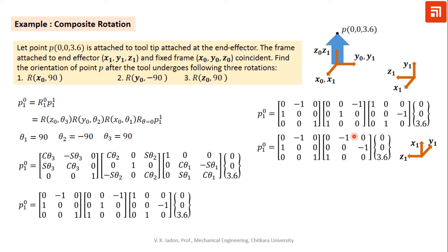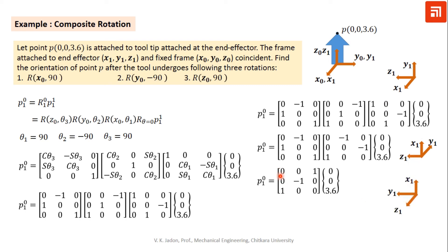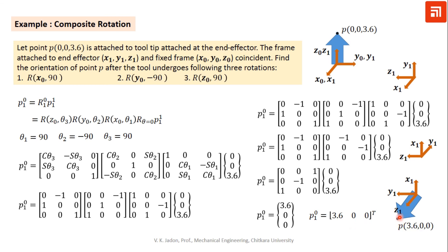Multiplying to get the third rotation result: the frame is rotated about z0, which corresponds to x1 at this stage, by +90 degrees. y1 comes along z1 and z1 comes here after rotation. Verification: x1 is along z0 (so 1 here), y1 is along minus y0 (so minus 1), and z1 is along x0 (plus 1). Finally, this is the position of point P on the end effector, represented in frame 0. This illustrates how frames change orientation and how rotation matrices capture that.